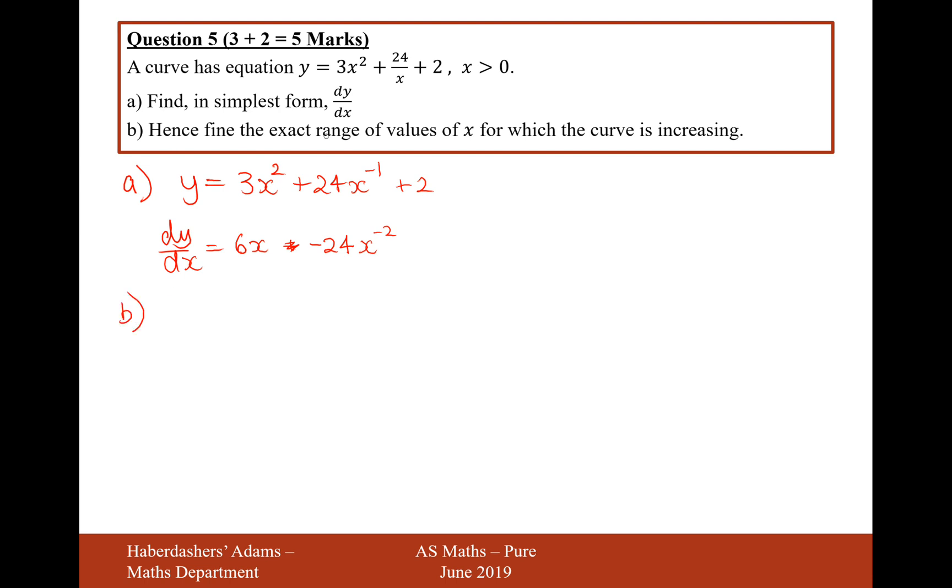Moving on to part B. Hence find the exact range of values for which the curve is increasing. Now if the curve is increasing then dy by dx is positive. If the gradient, if the graph is increasing then the gradient is positive.